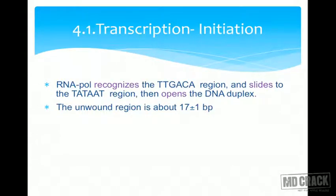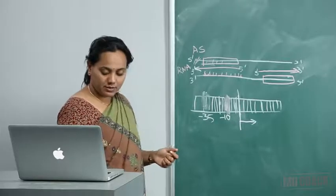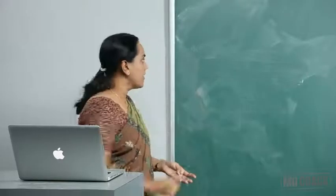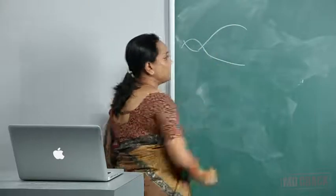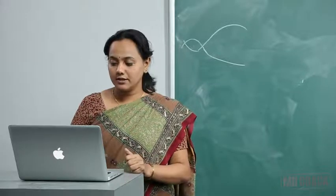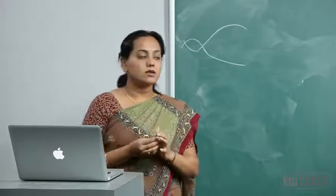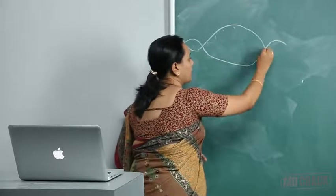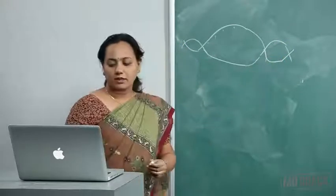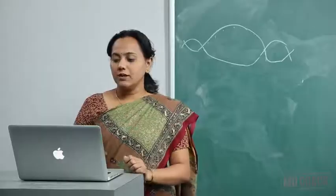In the first step — initiation — the RNA polymerase recognizes the TTGAC region and slides to the TATA region, then opens the DNA duplex. The double-stranded DNA helix is opened. The unwound region is about 17 ± 1 base pairs. This DNA has unbound, forming the open complex.